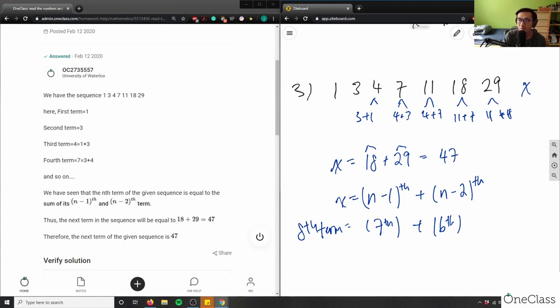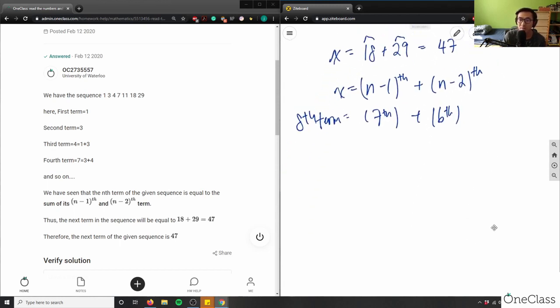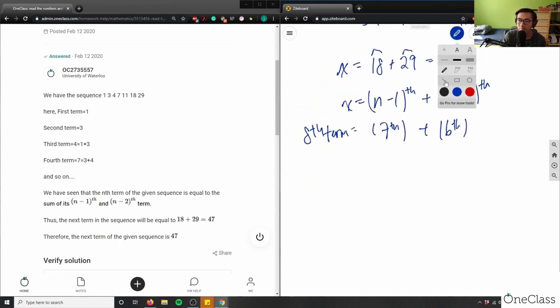If you asked me what is the 100th term in this case, the 100th term would be simply just the 99th term plus the 98th term.